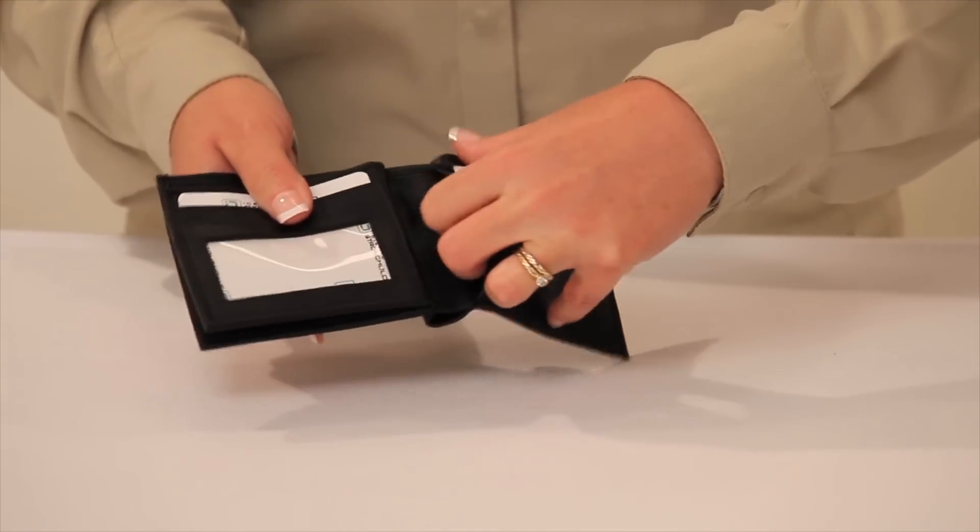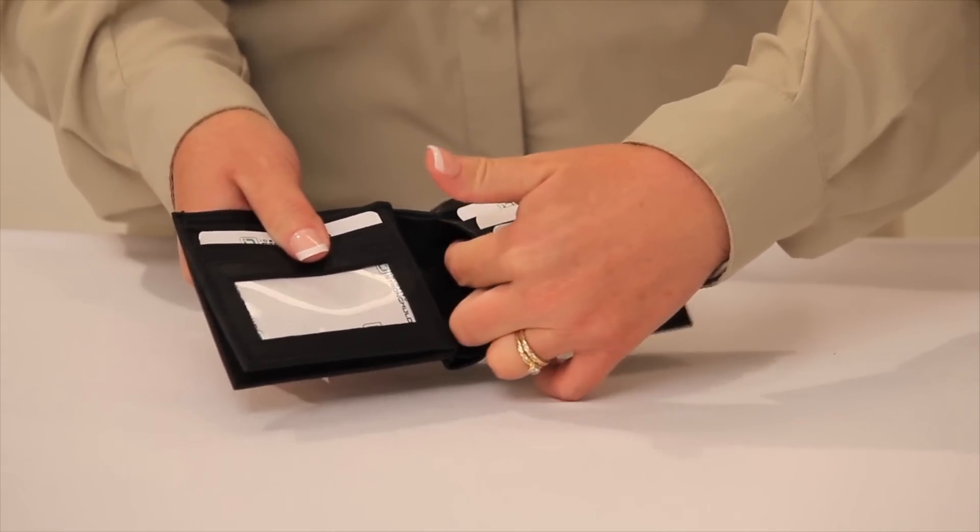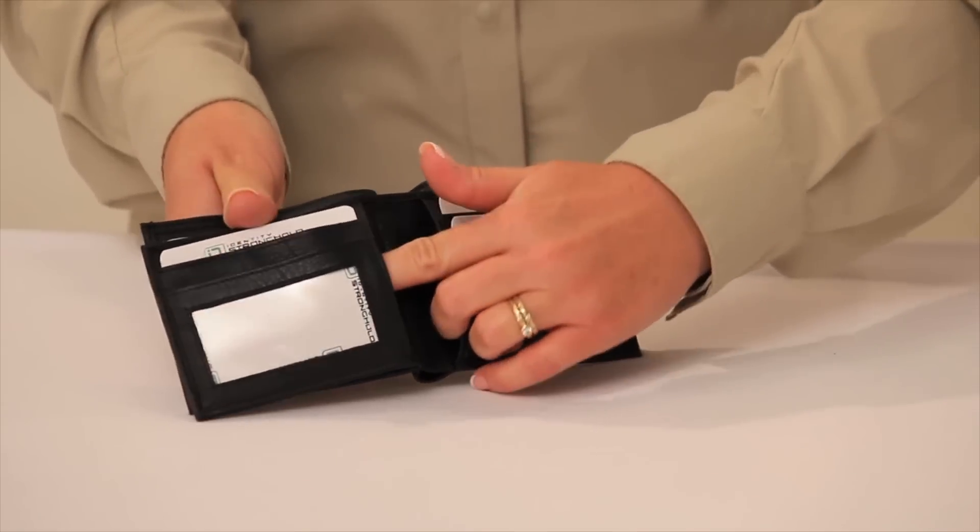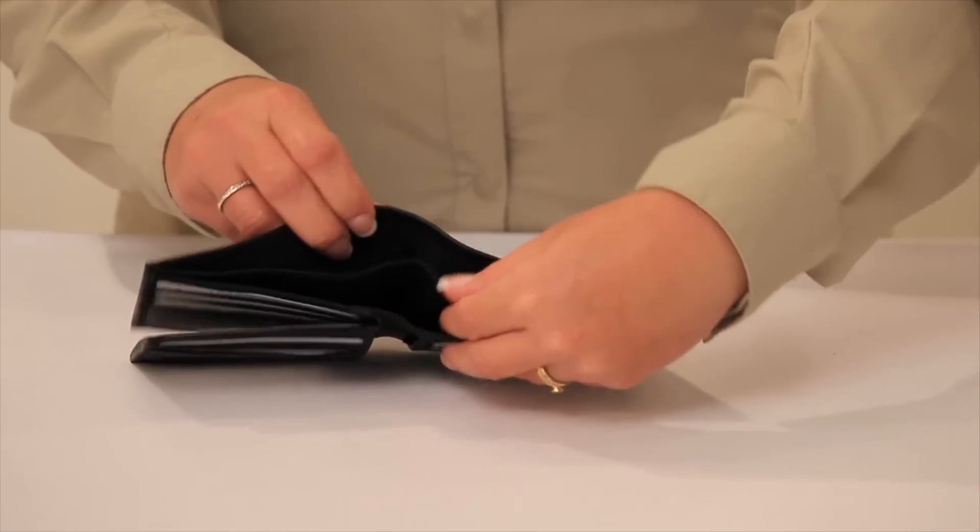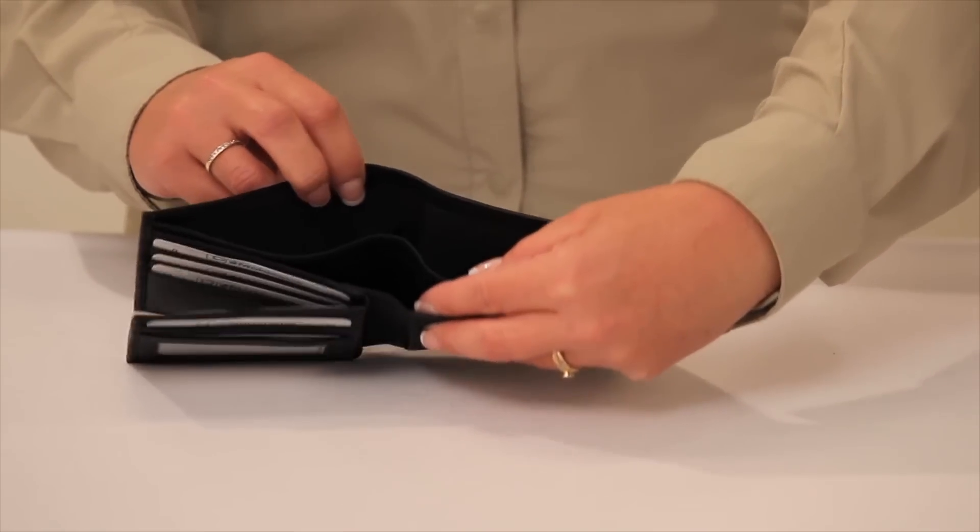This wallet also has extra shielded pockets where you can store business cards or receipts. The billfold area is divided into two sections and each section is individually shielded.